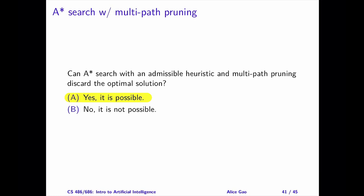Unfortunately, the answer is yes. We can construct a search graph for which A-star with multipath pruning will discard the optimal solution. If you haven't come up with an example yourself, this is a perfect opportunity to do so. Pause the video and work on your example — come up with a search graph and specify the cost on the edges. Try to make your search graph as simple as possible. Please watch a separate video for the example that I came up with. I challenge you to come up with an example that's simpler than mine.